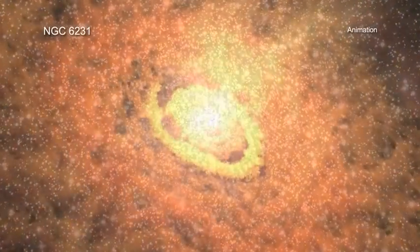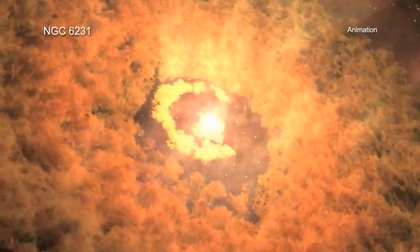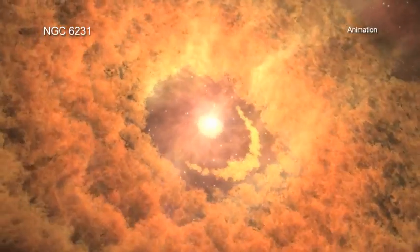Astronomers think that our Sun was born in a star cluster about 4.6 billion years ago that quickly dispersed.